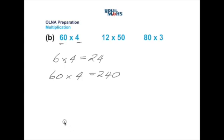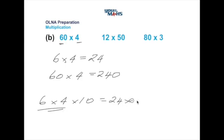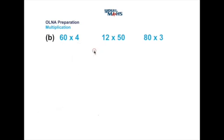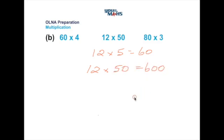But why is that? Sixty is six times ten, so we write six multiplied by four and then multiply by ten. Six fours are twenty-four, and then we multiply by ten — placing a zero at the end. Now let's look at 12 multiplied by 50. We do 12 multiplied by five first, which gives 60, then place a zero at the end for the extra zero in 50, giving 12 times 50 equals 600.